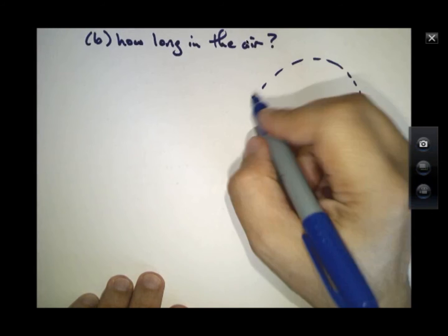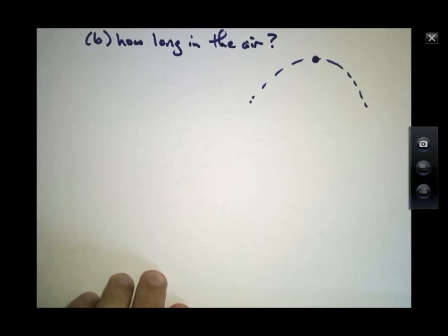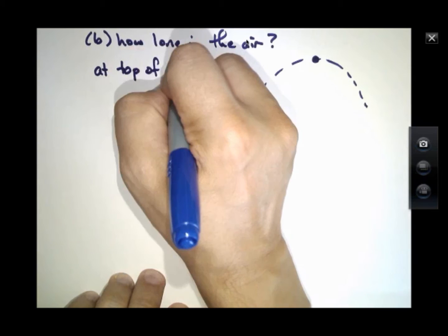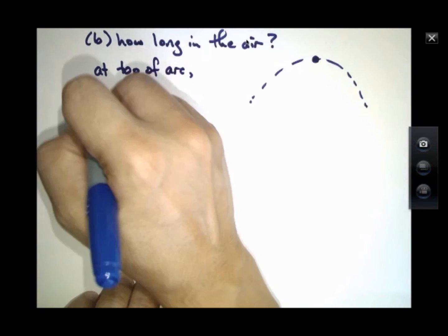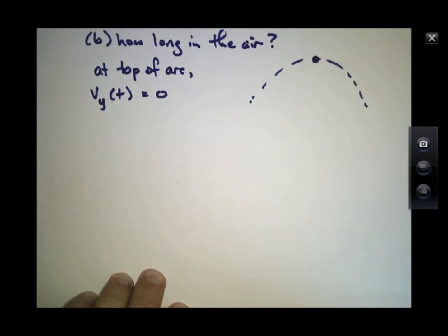At this particular moment, right at the top of the arc, we will be able to insert some knowledge here. That is that Vy, the vertical component of velocity, is zero.